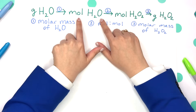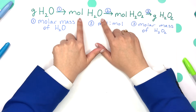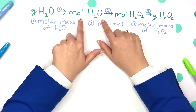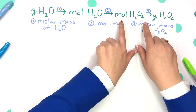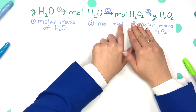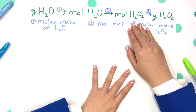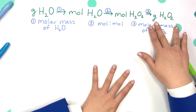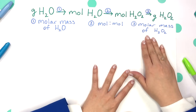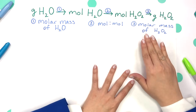Then once we have our moles of H2O, we will change our compound entirely using our mole-to-mole ratio found on our balanced equation — going from moles of water to moles of hydrogen peroxide. Now that we have our moles of hydrogen peroxide, we can convert that to grams of hydrogen peroxide, once again using our molar mass of that compound.